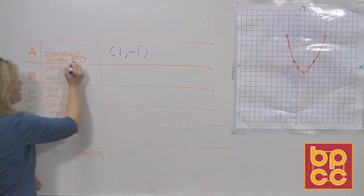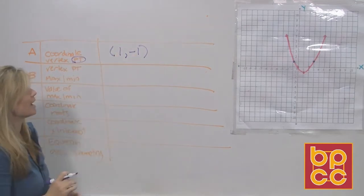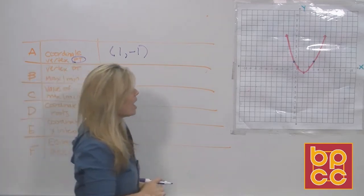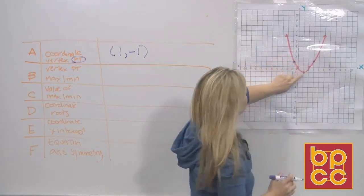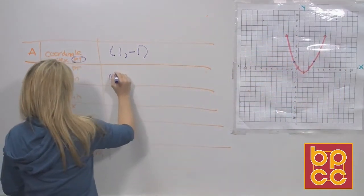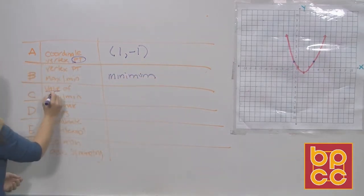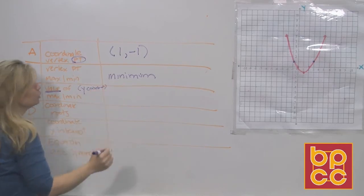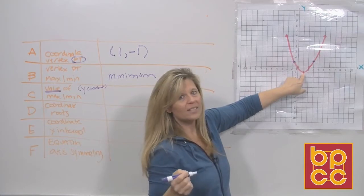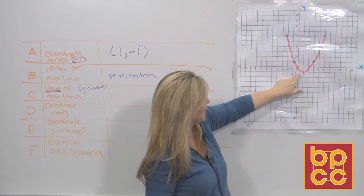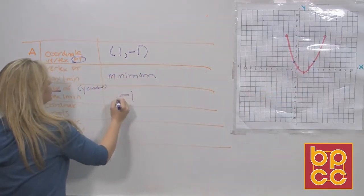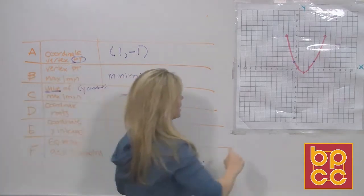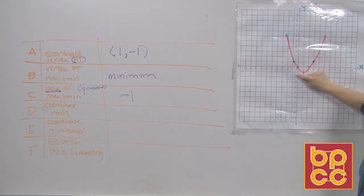Because it's a point, it goes in parentheses with an x value and a y value. They're going to ask you: is the vertex point the maximum, the highest point of the curve, or the minimum, the lowest point? Because this parabola keeps going up, that's going to be the lowest point — so that is a minimum. Then they'll ask the value of the minimum. The value means the y coordinate. The lowest y value of this curve is negative 1.